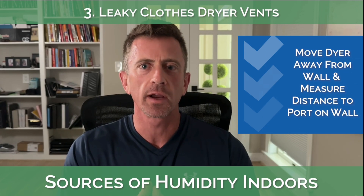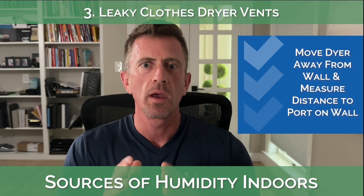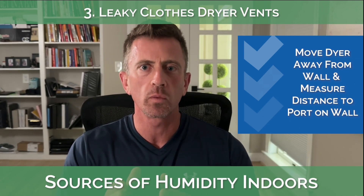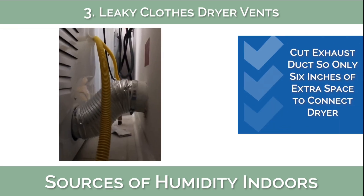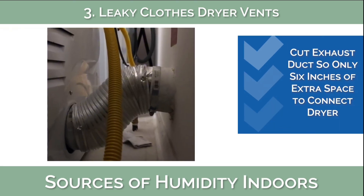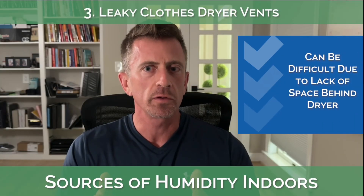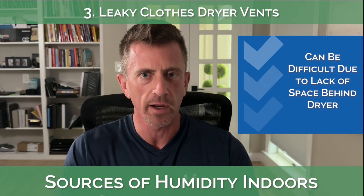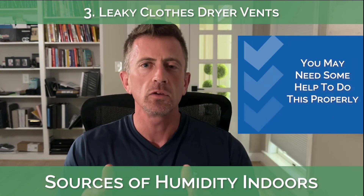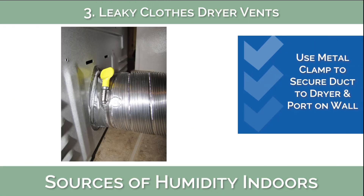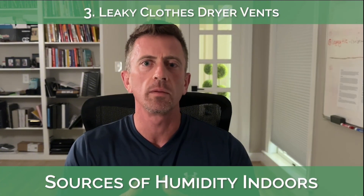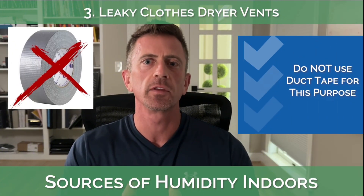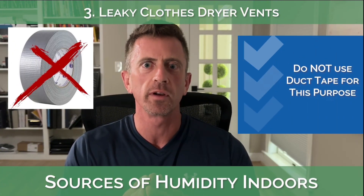If this is the case in your house, you need to move the clothes dryer away from the wall, measure the distance between the port and where the dryer will be, and cut the exhaust duct so that it only has about six extra inches of space to connect the dryer to the port inside the wall. This can be difficult due to the limited space behind the dryer and the fact that the exhaust port is usually at the bottom of the dryer and wall behind it, so you might need some help. Make sure you use a metal clamp to secure both ends of the exhaust duct to the dryer and to the port in the wall. Do not use duct tape for this purpose, as it will eventually lose its hold and blow off one of the ends.